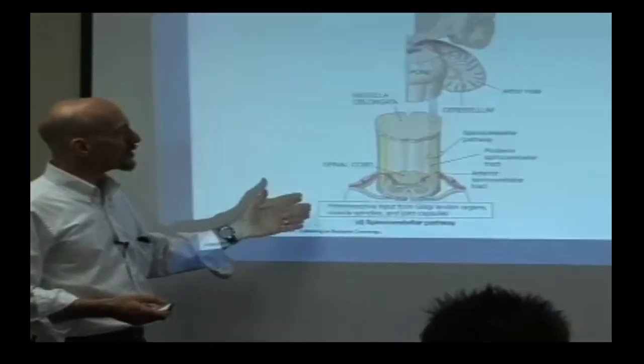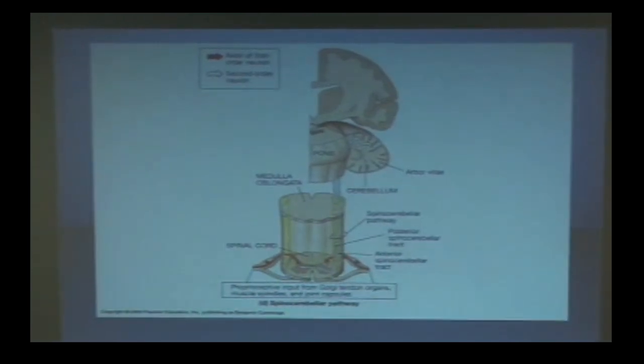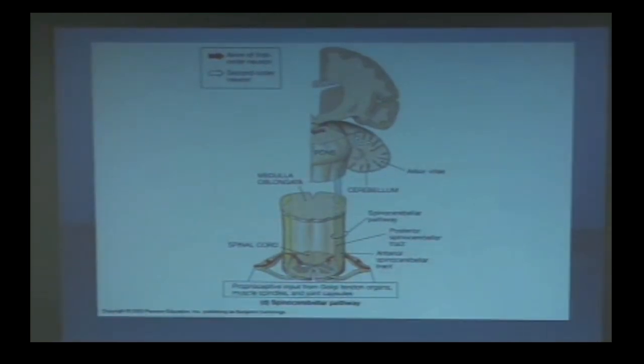The spinocerebellar pathways—there's really two of them, dorsal and ventral—are the ones that carry mechanoreceptor information up. Where do they go? Spino- from the spine, -cerebellar to the cerebellum. They're one of the primary inputs into the cerebellum.